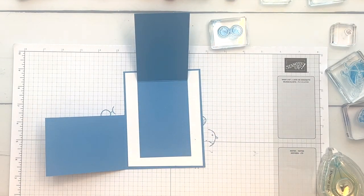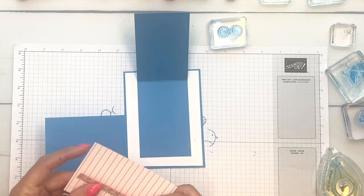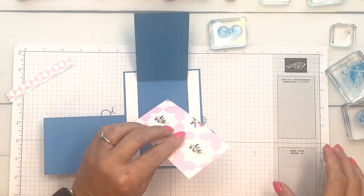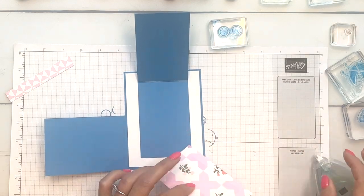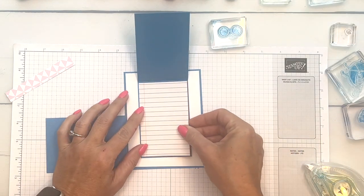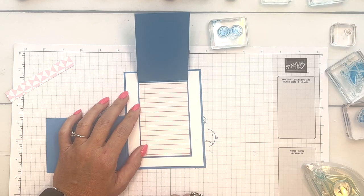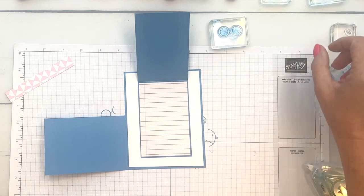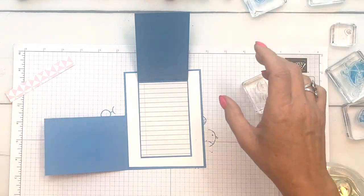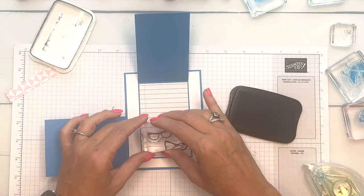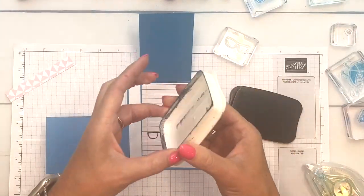See how that works. That's just a place for us to embellish. I have some Something Eclectic designer series paper cut to fit perfectly right in there. I love notebook paper, notebook-looking designer series paper. It's just the cutest. On the inside I took these glasses and stamped them a couple of times.